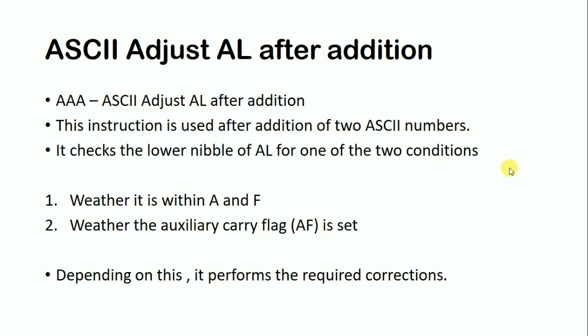The ASCII Adjust After Addition instruction is simply represented as AAA. This instruction is used after addition of two ASCII numbers. It checks the lower nibble of AL for two conditions: whether it is within the range of A to F, and whether the auxiliary carry flag is set. Depending on these two conditions, the AAA instruction performs the required corrections.